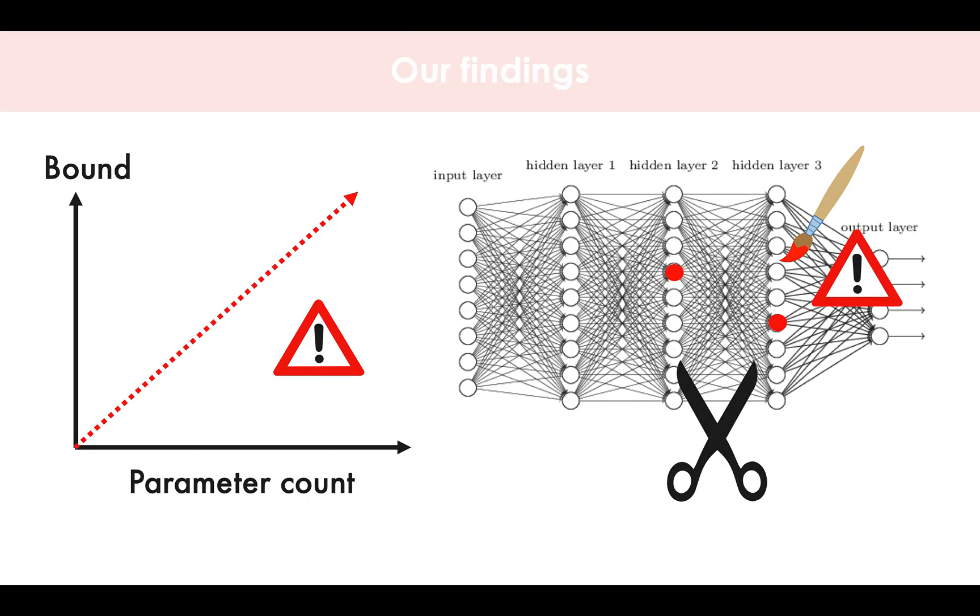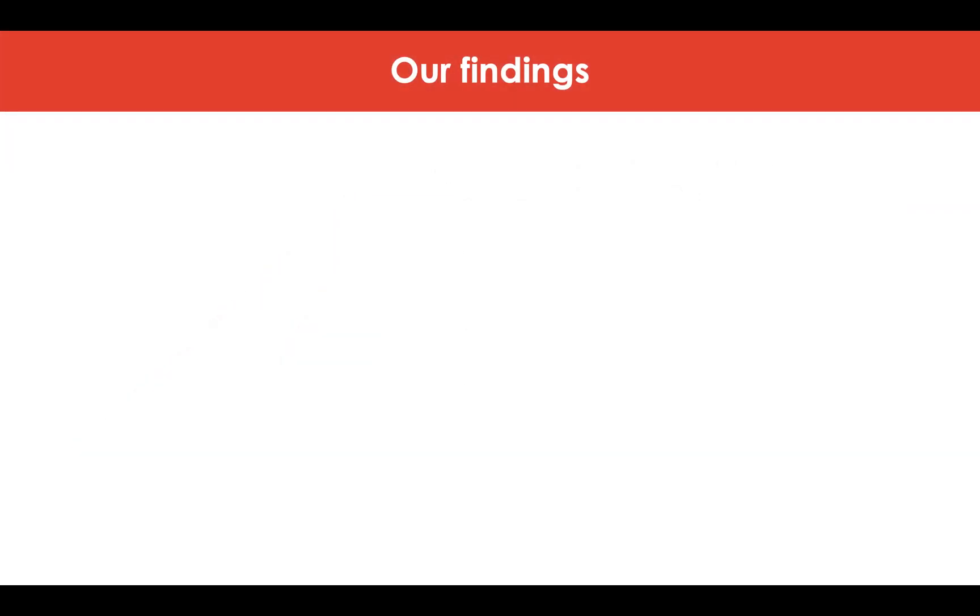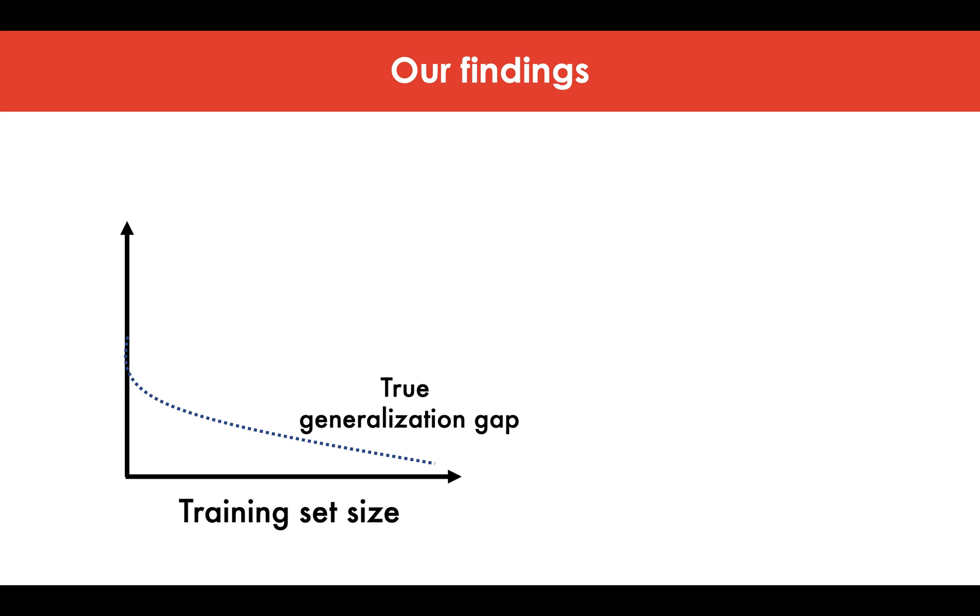In addition to these issues, in our paper, we bring to light some more concerning problems troubling these bounds. First is our finding that even though the true generalization gap decreases with training set size, as expected, these bounds in contrast increase with the training set size. Hence, parameter count dependence is not the only problem plaguing these bounds.